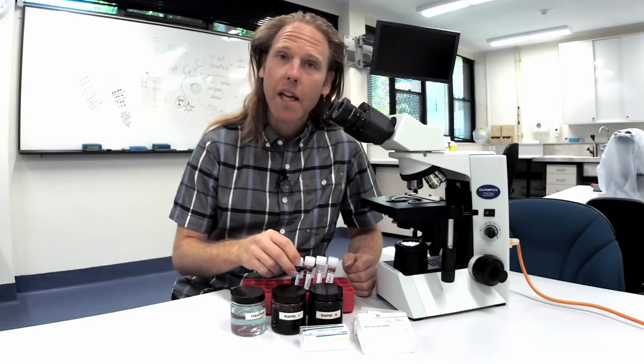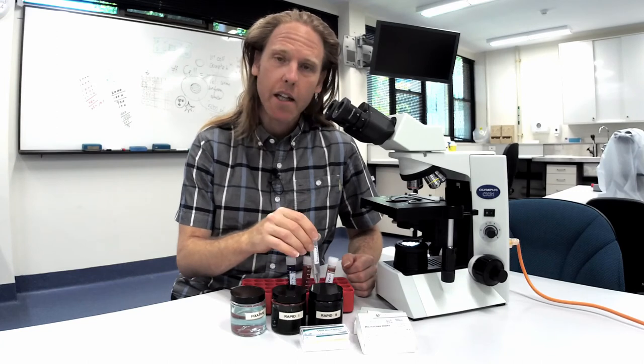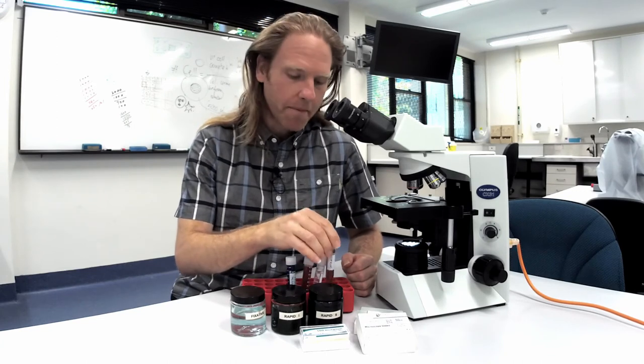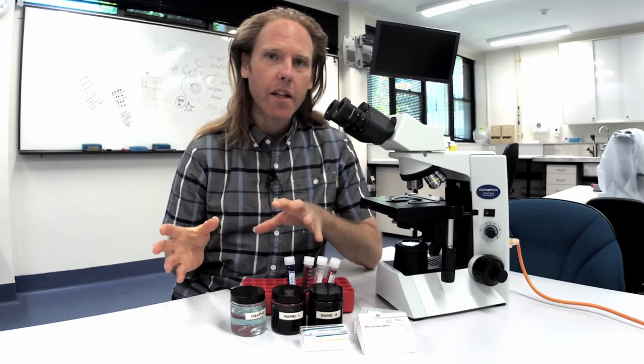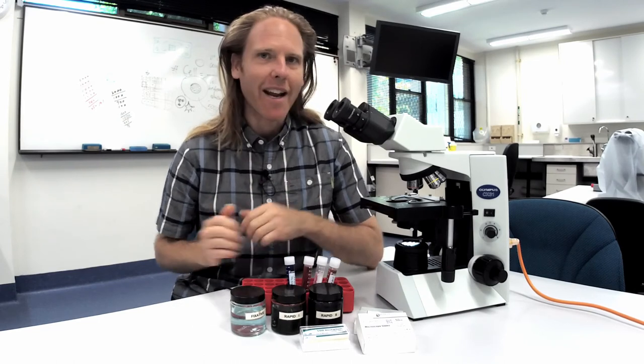The gram stain consists of crystal violet, iodine, a decolorizer and saffronin. Gram positive bacteria stain up deep violet to purple and gram negative bacteria stain up pink to red.